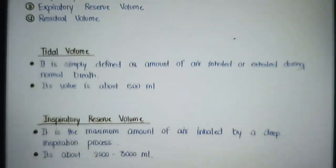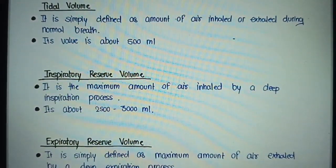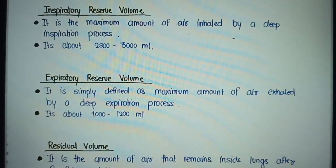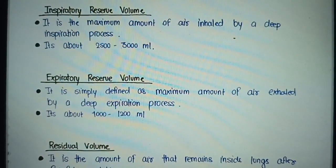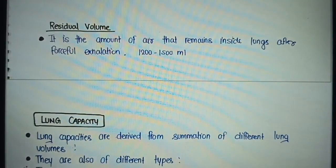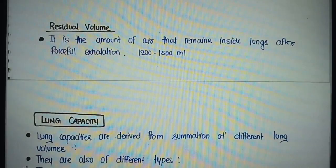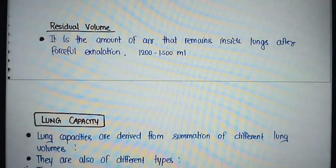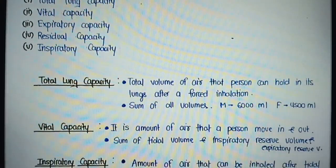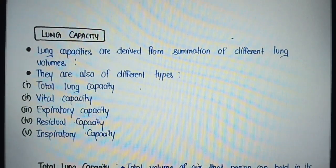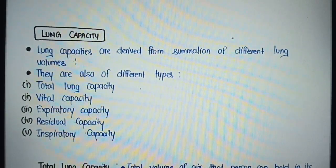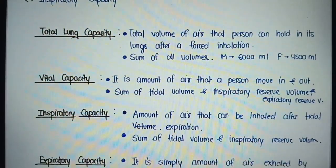Lung capacity. Lung capacities are derived from the summation of different lung volumes. They are of different types: total lung capacity, vital capacity, expiratory capacity, residual capacity, and inspiratory capacity. Total lung capacity is the total volume of air that a person can hold in their lungs after a forced inhalation, the sum of all volumes. Male: 6000 milliliters, Female: 4500 milliliters. Vital capacity is the amount of air that a person can move in and out, the sum of tidal volume, inspiratory reserve volume, and expiratory reserve volume.